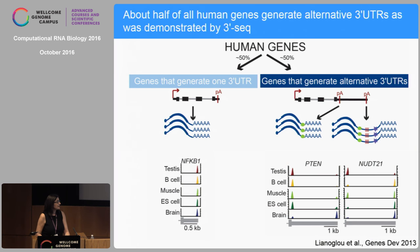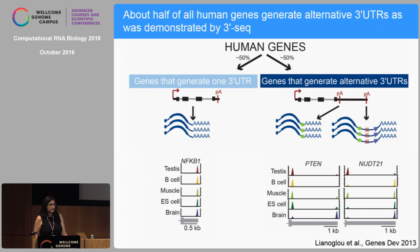There is also a nice correlation between 3' UTR length and the number of cell types in an organism, which suggests that 3' UTRs may play a role in higher organisms. A few years ago, we developed a sequencing protocol called 3' Seq that allows us to quantitatively map all the 3' ends of the transcriptome. We found that about half of all human genes make only one 3' UTR, but the other half makes alternative 3' UTRs. If a proximal polyadenylation signal is used, then an mRNA contains a very short 3' UTR. However, when a distal polyadenylation signal is used, the mRNA contains a long 3' UTR.